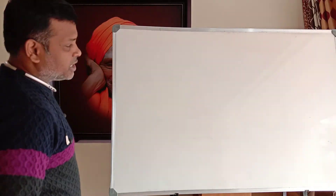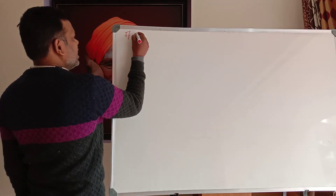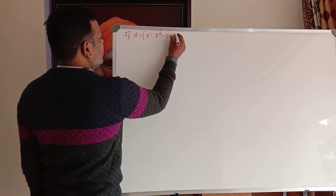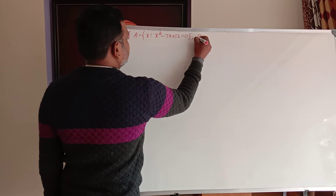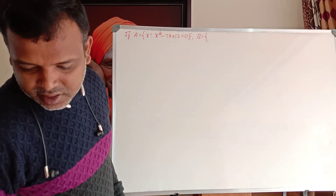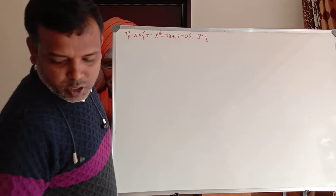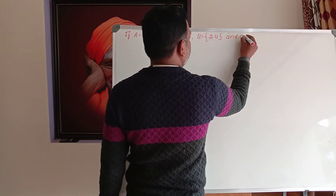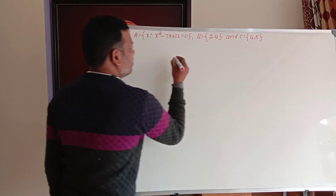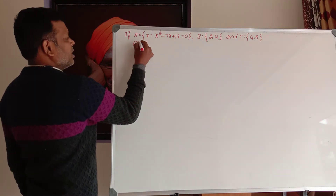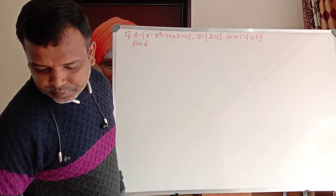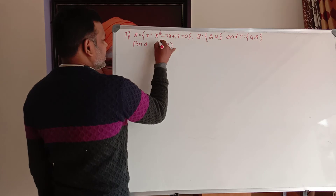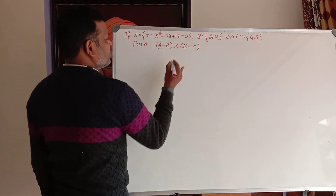If A is equal to x such that x squared minus 7x plus 12 is equal to 0 — that is Set A. Next, Set B is {2, 4} and Set C is equal to {4, 5}. Find (A minus B) cross (B minus C).